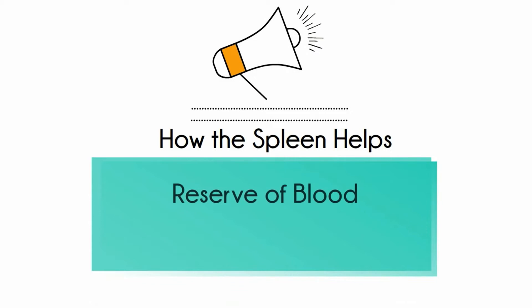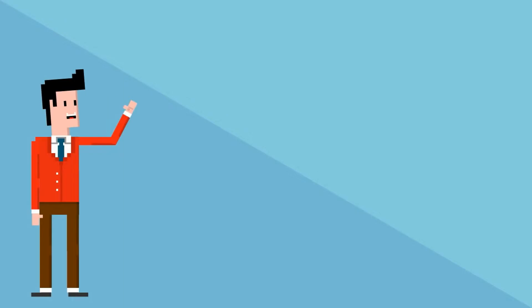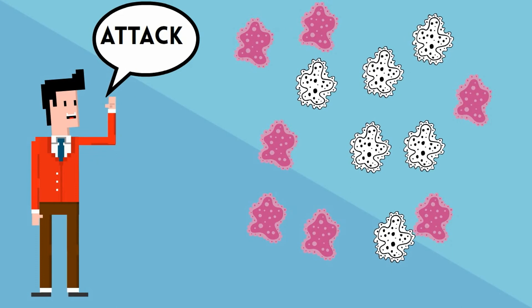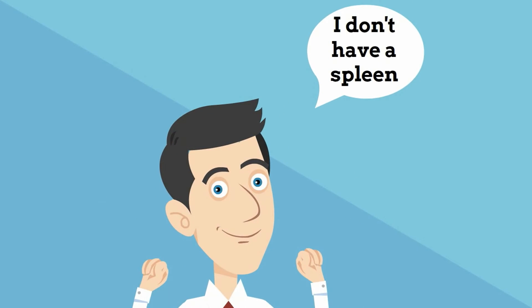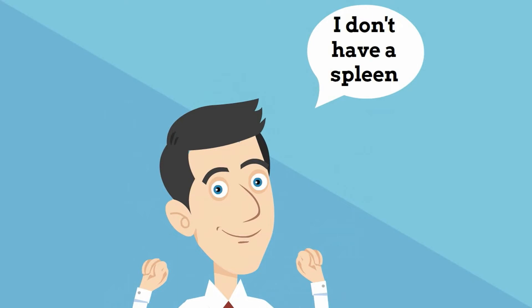Secondly, the spleen holds a reserve of blood in case of significant bleeding. Much like a blood-filled balloon, it acts as a reserve source for extra blood. The spleen also helps the immune system to recognize and attack foreign pathogens and other allergens. Interestingly, while most people are somewhat healthier with a spleen, it is absolutely possible to have a normal life without a spleen.